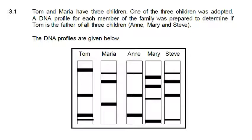Before we go on, here's a tip on how to figure out which child is the biological offspring - this is usually a good time to have some highlighters available. The first thing you do is look at Tom, and we're going to make Tom blue. We need to see which of the kids have got Tom's bands. Starting at the top, Tom's first band doesn't appear in any of the children, but his second band appears in both Anne and Steve.